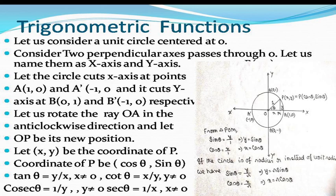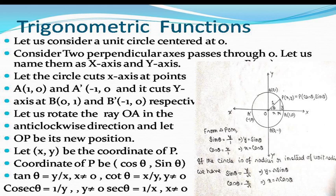If we rotate ray OA anti-clockwise by angle θ to position OP, and P has coordinates (x, y), then drawing perpendicular PM on OA gives a right triangle POM. From this triangle: sin θ = y/1 = y, and cos θ = x/1 = x. So the coordinates of P can be written as (cos θ, sin θ). Similarly, tan θ = y/x, cot θ = x/y, cosec θ = 1/y, and sec θ = 1/x.